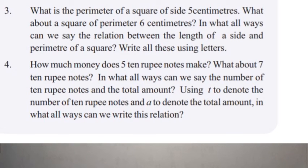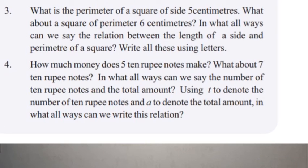Fourth question: How much money does 5 ten-rupee notes make? It's 5 ten-rupee notes — how many? And what about 7 ten-rupee notes? In what ways can we say the relation between the number of 10-rupee notes and the total amount? Using T to denote the number of 10-rupee notes and A to denote the total amount, in what ways can we write this relation? If we write the number of 10-rupee notes, we will write T.